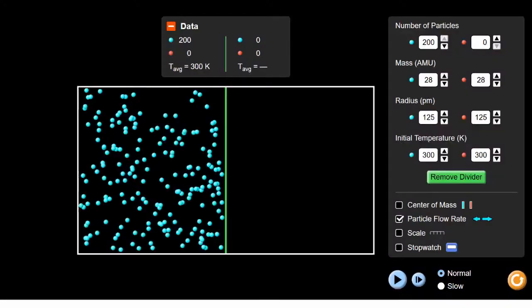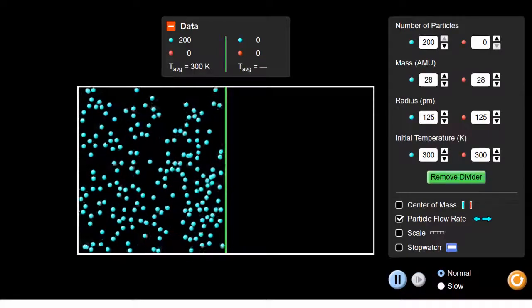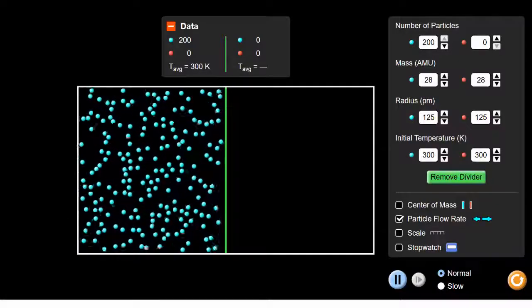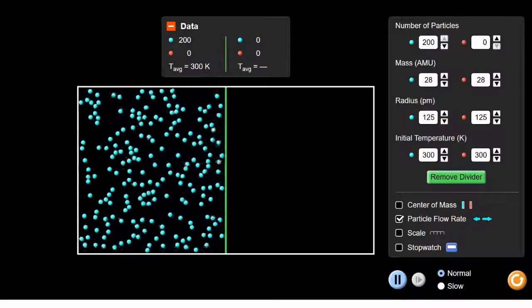You start off with a population of particles contained on the left-hand side of a divider. The particles are all moving around randomly, bumping into one another. Notice that when they collide they change direction, like billiard balls.